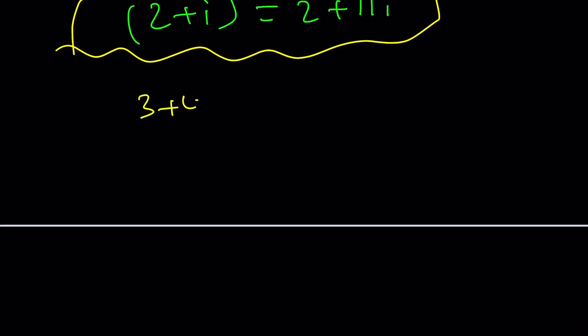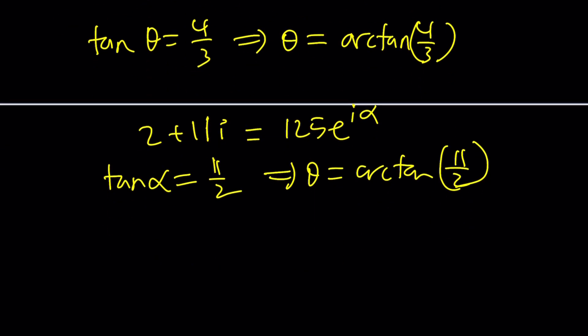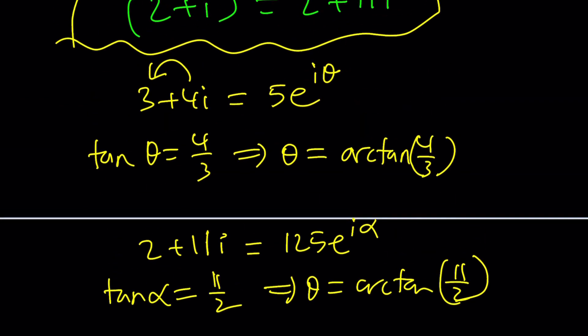So, if you consider 3 plus 4i, I can write it as 5 times e to the power i theta. And theta is determined by tangent theta equals b over a, which is 4 thirds. So, theta, since I'm in the first quadrant, it's great to be there. Tan inverse or some people don't like tan inverse. So, I'm gonna write arctangent 4 thirds. And then I can write 2 plus 11i similarly, right? And then this time it's gonna be 125 e to the i alpha. And tangent alpha is 11 over 2. And then theta is arctan 11 over 2. But the problem is, how do you associate these arctangents? That's gonna be very problematic. That's why looking at moduli is always a good thing. See?